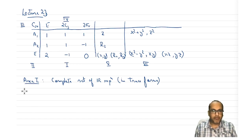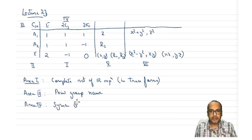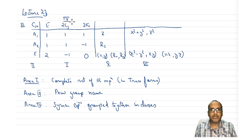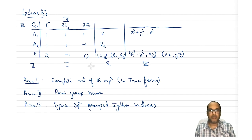Area 3 is the point group name. Area 4 is the symmetry operations or group elements grouped together in classes. For example, 2C3 is one class — C3 and C3 squared are combined into one class. Sigma V1, sigma V2, sigma V3 are combined into another class. That is also very well known.